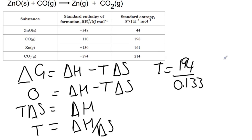You could also have 194,000 divided by 133 and you will get to the same answer. The temperature at which this reaction becomes feasible is 1458 Kelvin. So the temperatures that you get for these reactions all come out in Kelvin so usually are larger numbers.